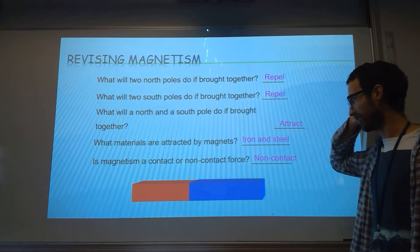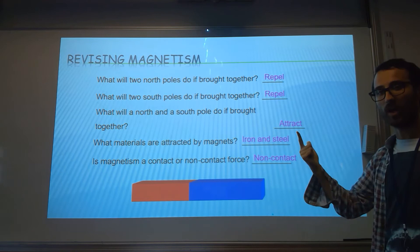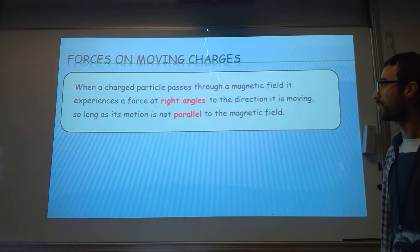There are some other materials that attract to magnets. Iron and steel are just some of the main ones, but you can remember NICS: Nickel, Iron, Cobalt, Steel. Steel only attracts because it has iron in it - it's an alloy.